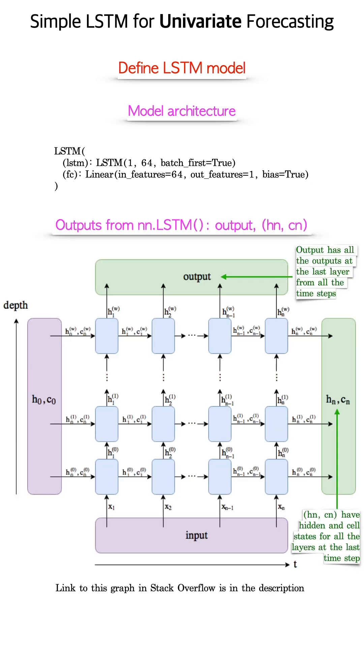Now, we need to be careful about the three outputs from the LSTM layer in PyTorch. As illustrated on this graph, the first output has all the outputs from all the time steps, but only at the last layer. The other two outputs, Hn and Cn, have the hidden and cell states for all the layers, but only for the last time step.